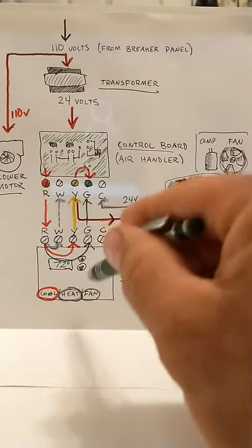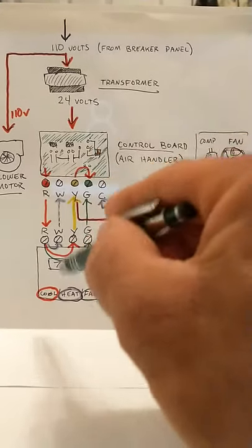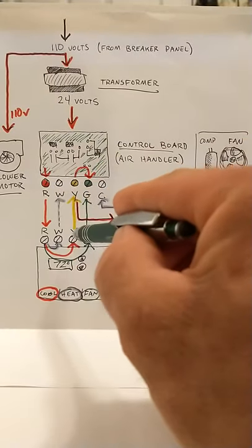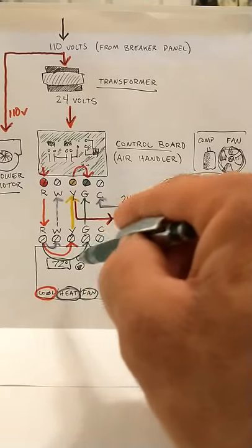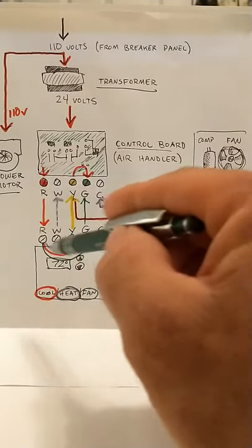When you turn your thermostat into cooling mode, what happens is it'll close a circuit between your R terminal and your Y terminal in your thermostat. So this is all internal right here. You're not actually doing any of that wiring. It's all inside.